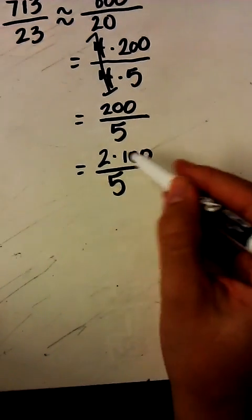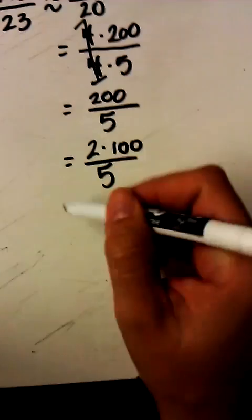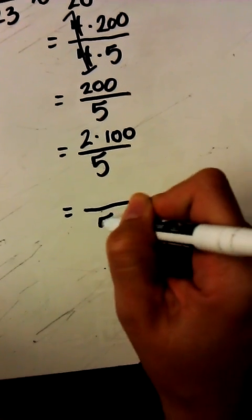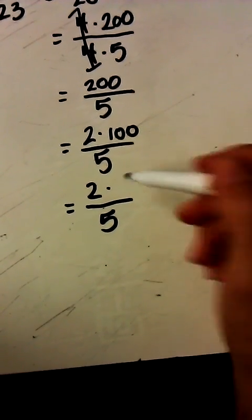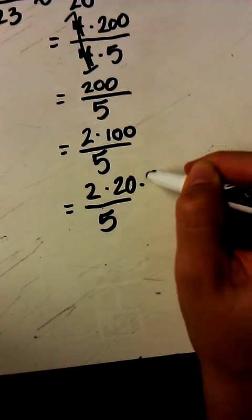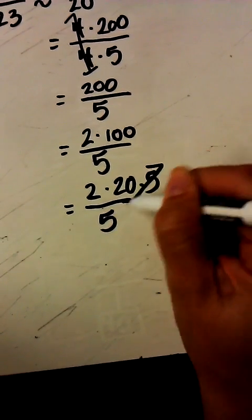I don't have a factor of 5 in my numerator yet but I can decompose 100 further. 2 is a prime number so it's not going to decompose. I know that 20 times 5 is 100 and now I have my equivalent form of 1.